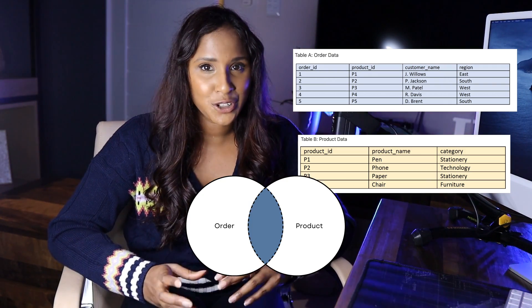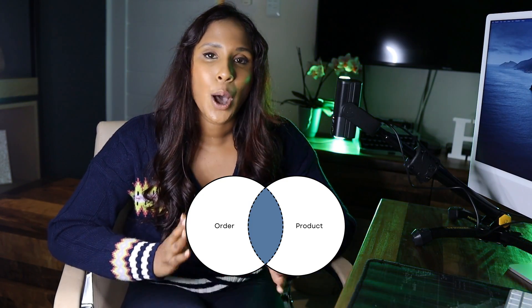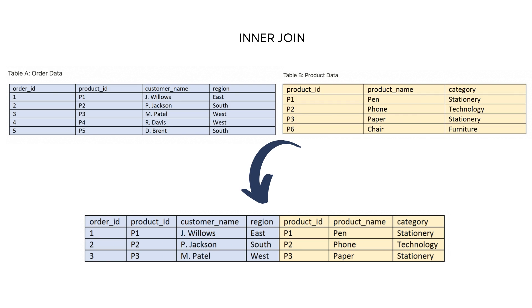The INNER JOIN produces only records that match in both the orders table and the product table. So if product IDs P1, P2, and P3 exist in both tables, only those three appear. Any product IDs that only exist in one table fall away.